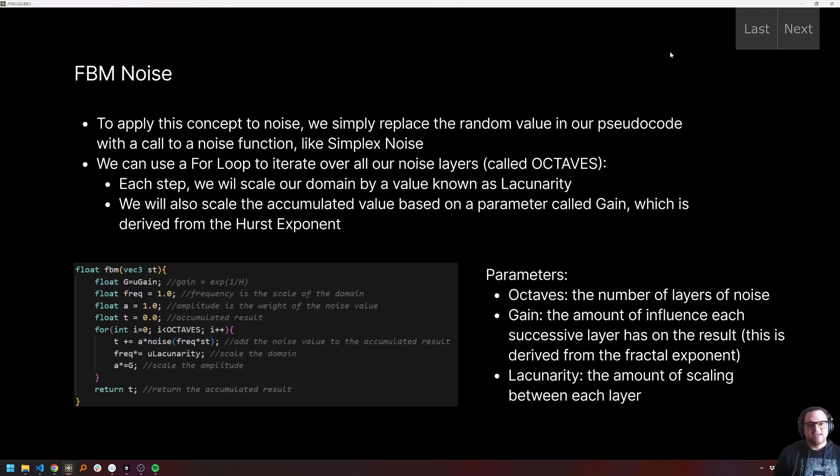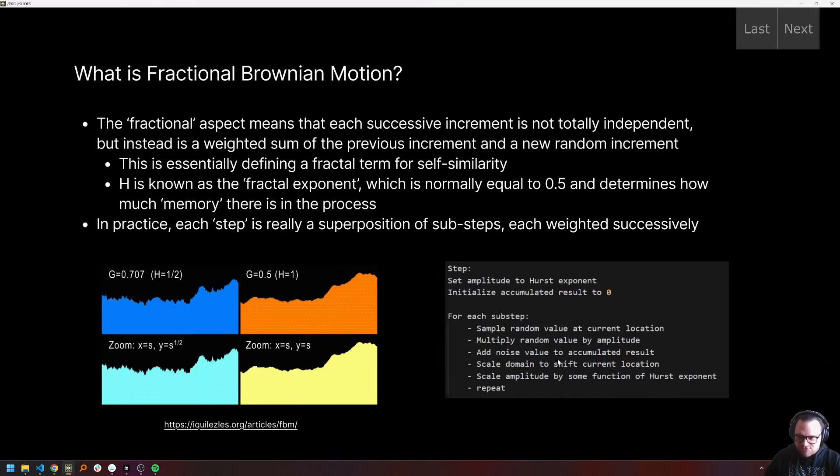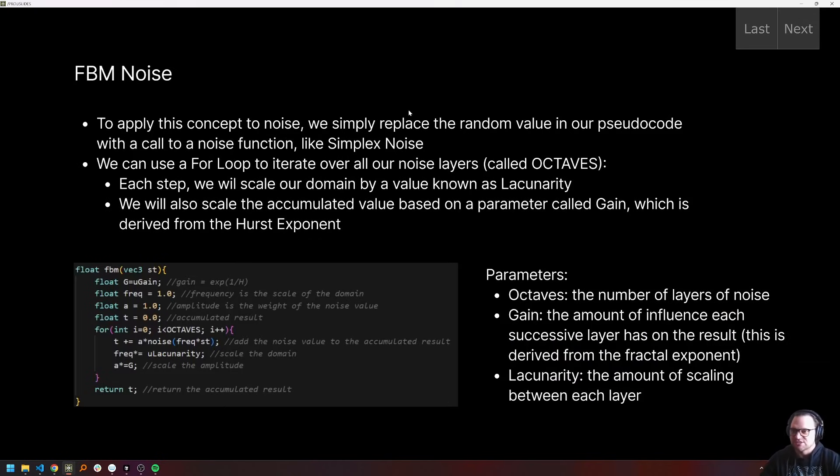So yeah, that was kind of the abstract and now this is going to be applying this algorithm specifically to noise. And so if we kind of go back here, really this random value is what we need to replace with a actual call to a noise function. So we can just use like a simplex noise, which we have already learned how to call in touch designer two lessons ago.